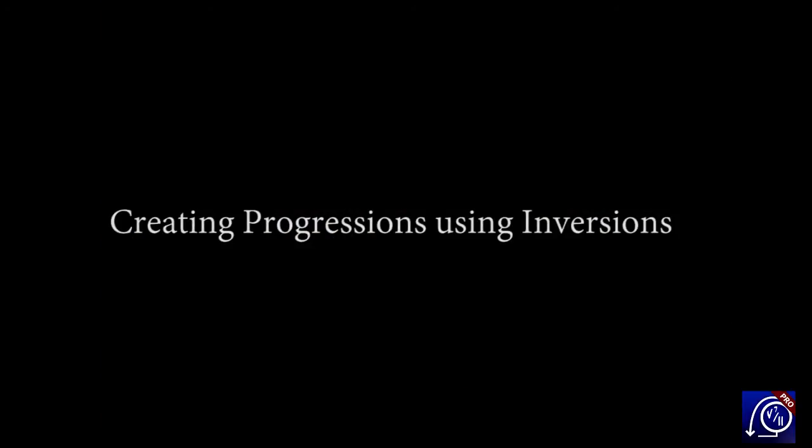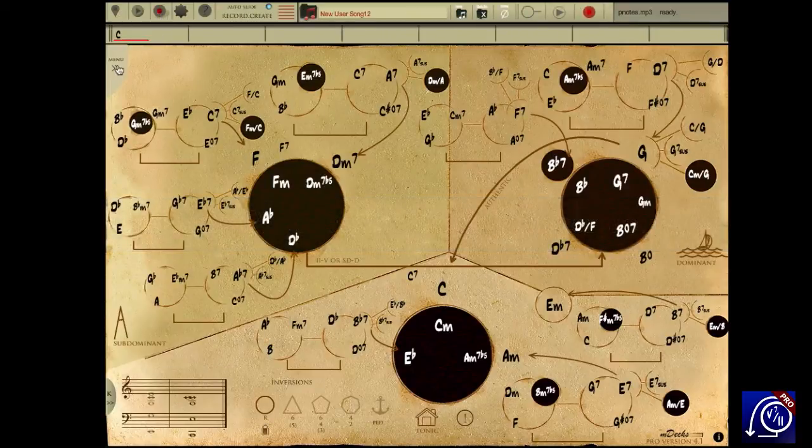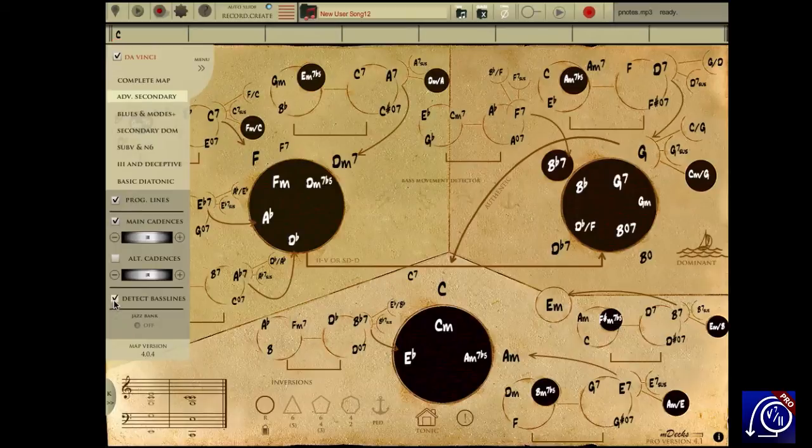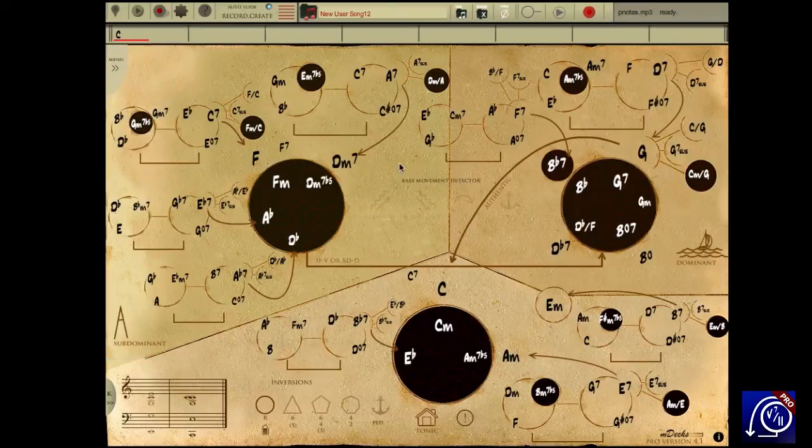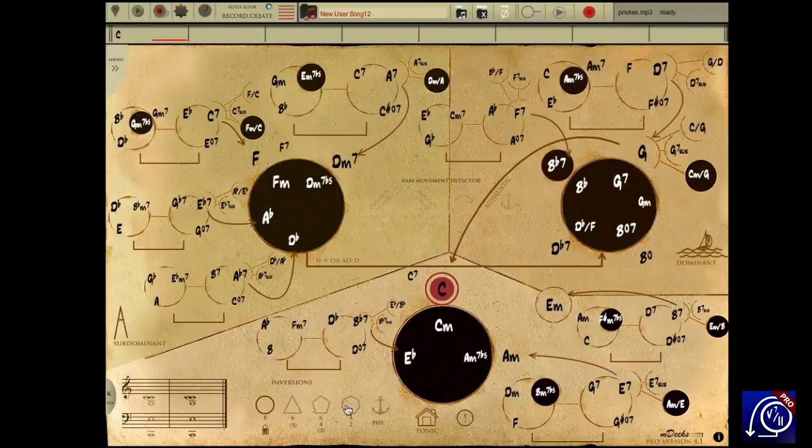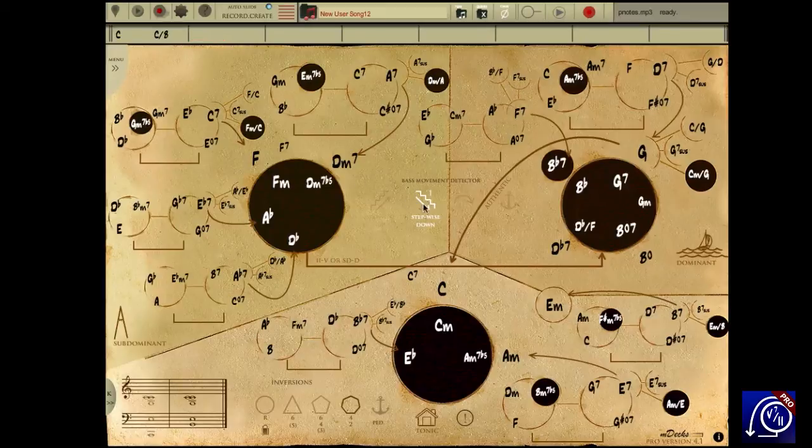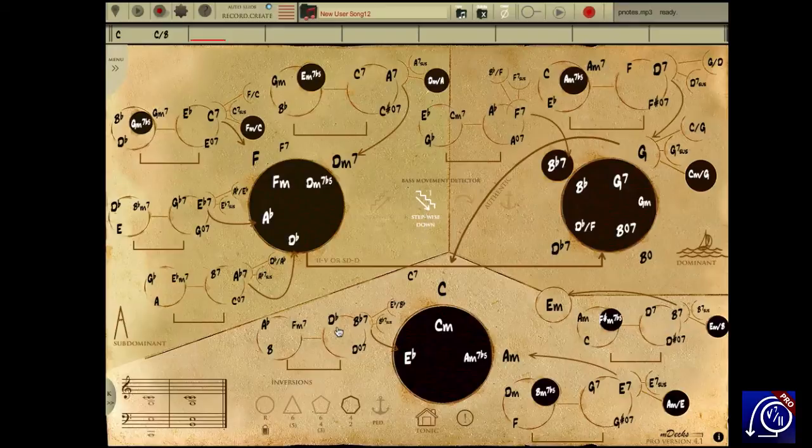Let's create a song using inversions. Let's change to recording mode. I will also activate the bass movement detector so we can view the bass lines being created. Let's insert a C chord in root position. There. Let's add the third inversion of the same chord. The chord staff panel shows C over B. The stepwise down icon has lit, since the bass moves down a half step from C in root position to C in third inversion.